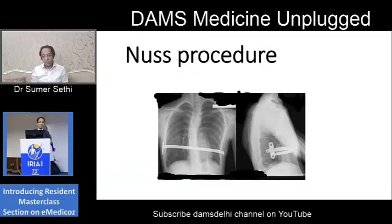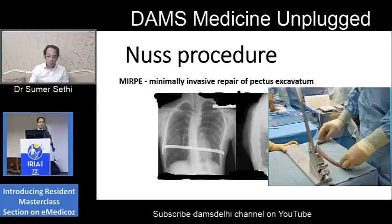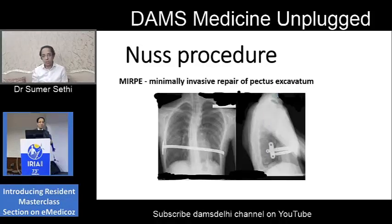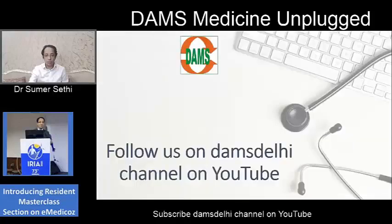The most important surgical procedure for repair of this defect is called the Nuss procedure, described by Dr. Nuss. It is also called minimally invasive repair of pectus excavatum, in which curved rods are placed behind the sternum to correct the deformity. This is a potential multiple choice question, and as a radiologist working in a hospital with thoracic surgery, you may see such X-rays in follow-up.